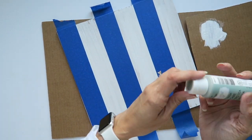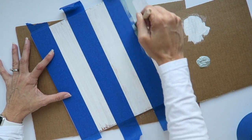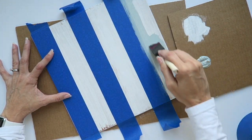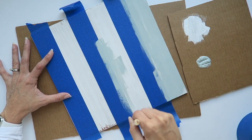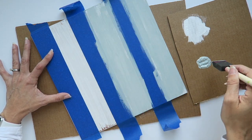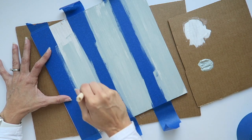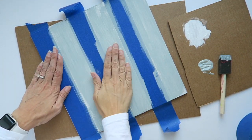Then use your medium color and paint those stripes. Be careful on the edges of the tape. You don't want your paint to seep under. You can use a blotting motion and make sure not to push the paint under the tape. Paint all the areas that are still exposed. Let it dry.